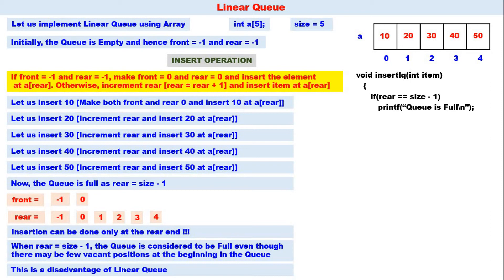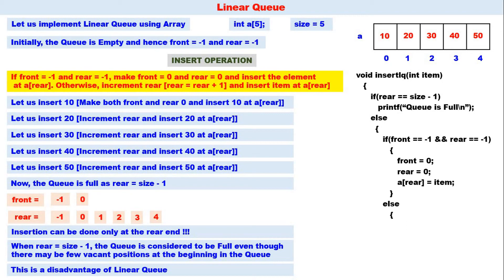The insert function logic: if rear equals size minus one, the queue is full and insertion cannot be done. Otherwise, if front equals minus one and rear equals minus one, the queue is empty — make both front and rear equal to zero and insert the element at a[rear]. Otherwise, increment rear and insert the element at a[rear]. That is the complete function for inserting an element into a linear queue.